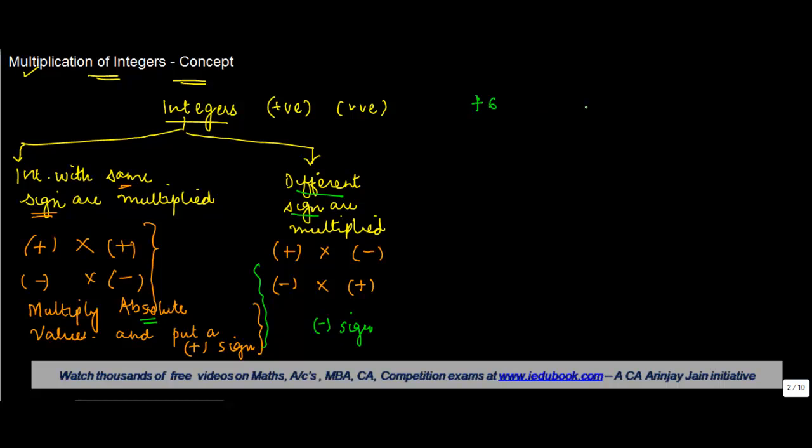Let's say I multiply plus 6 with plus 3, or I multiply minus 6 with minus 3. So in both these cases, the sign is plus here and plus here, it's minus here and minus here. So you have to first multiply the absolute values: the absolute value here is 6, here it is 3, so 6 times 3 will give you 18. And because the sign is same.